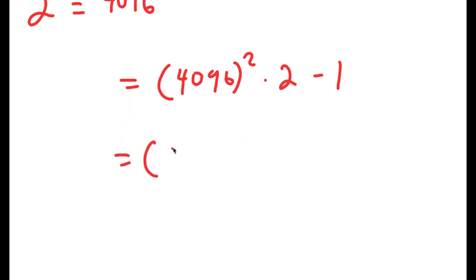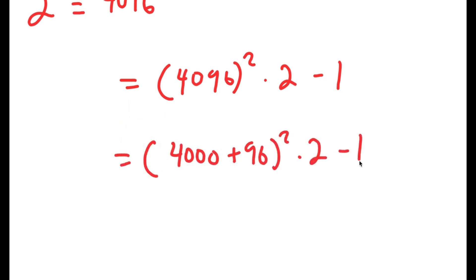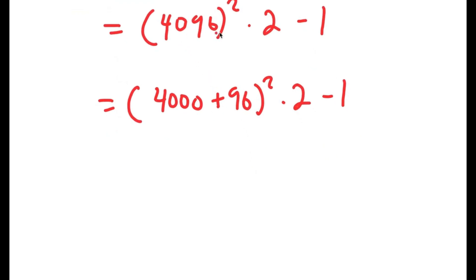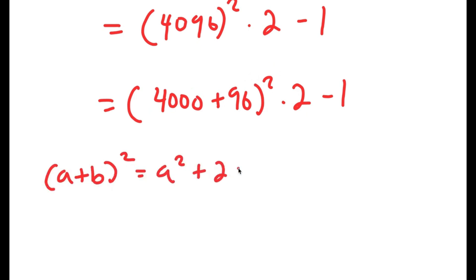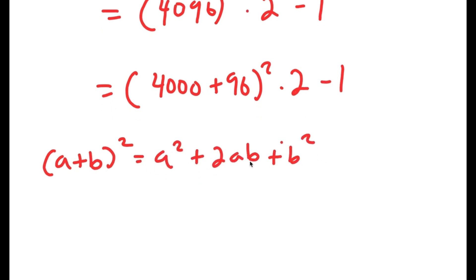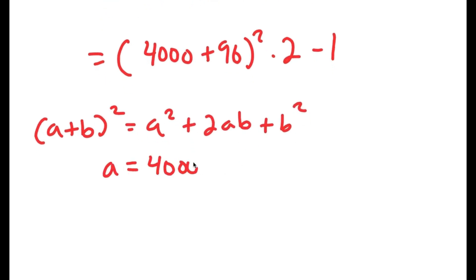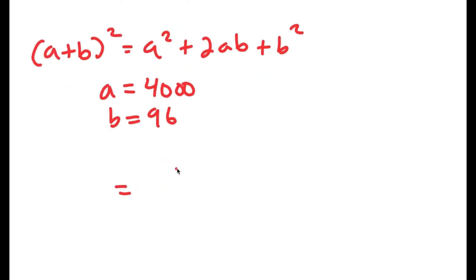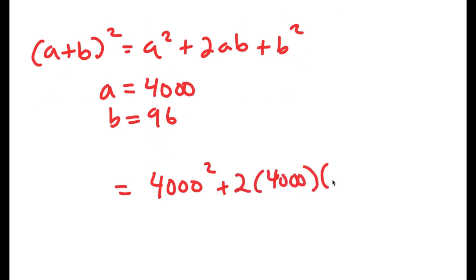I'm going to simplify this as 4000 plus 96, all squared, times 2 minus 1. The reason is that 4096 squared is really hard to calculate directly, so by changing it to 4000 plus 96 squared, I can use the property: A plus B squared equals A squared plus 2AB plus B squared, where A is 4000 and B is 96. This turns into 4000 squared plus 2 times 4000 times 96 plus 96 squared.